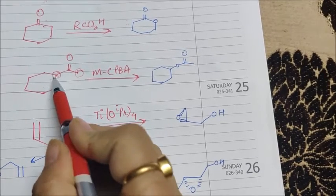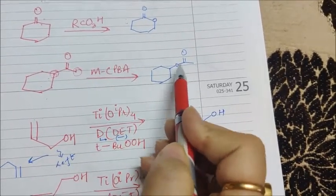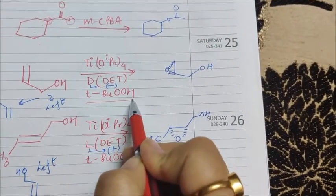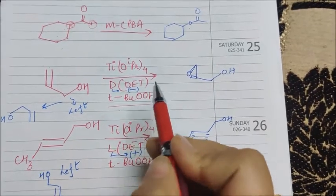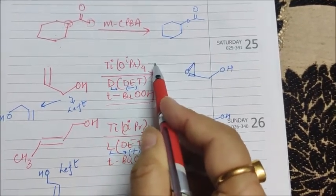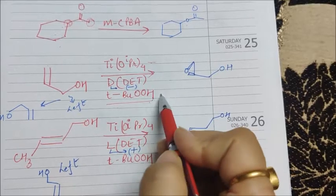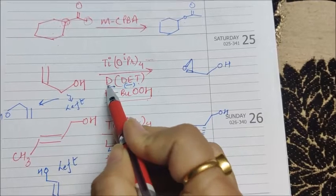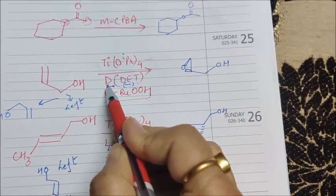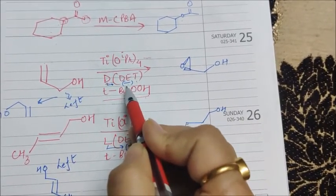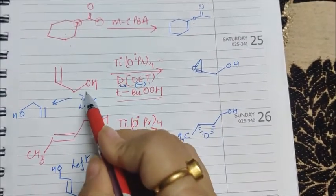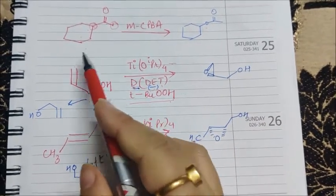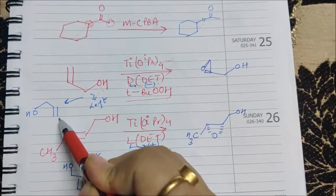Now in the next question, this is a question for Sharpless epoxidation. As you will be remembering by the oxidant as well as the catalyst we are using here, D—instead of writing minus or plus, I have written D—so I want you to memorize it that D means minus DET. Now I will just rotate my molecule so that OH will come above the alkene.